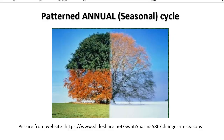Hello everybody. This is a short video class about patterned annual cycle or seasonal cycle. This is a very often asked question — for example, about the decennial cycle. This is a cycle based on a 10-year pattern, like an annual pattern. Today is 2022, so 10 years ago is 2012, 20 years ago is 2002, next is 1992, and so on. Another example: someone sees a similarity between 2022 and some year before, like 1980 or 1991.